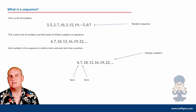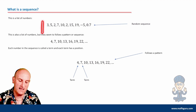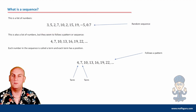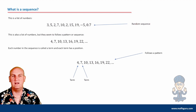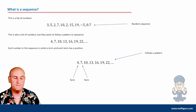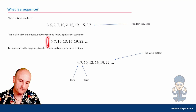What is a sequence? Well, what is a list of numbers? I've got a list of numbers here that I've completely randomly come up with. Is it a sequence? Probably not — it's certainly a random list of numbers. Is there any order to them? No. Can I guess the next number by following some sort of rule or pattern? No.